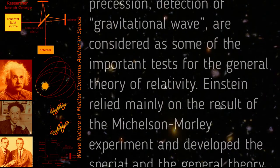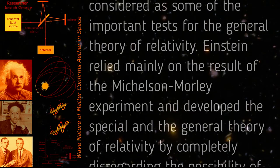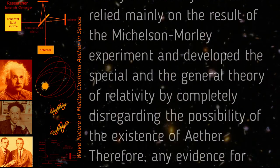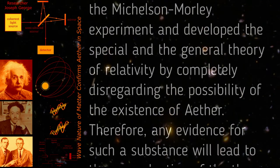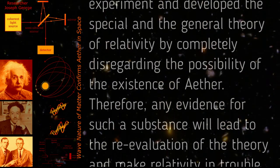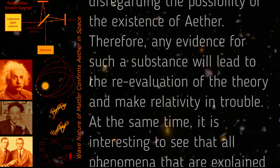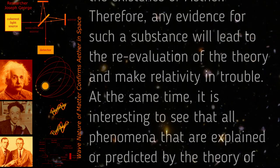Einstein relied mainly on the result of the Michelson-Morley experiment and developed the special and general theory of relativity by completely disregarding the possibility of the existence of ether. Therefore, any evidence for such a substance will lead to the re-evaluation of the theory and make relativity in trouble.